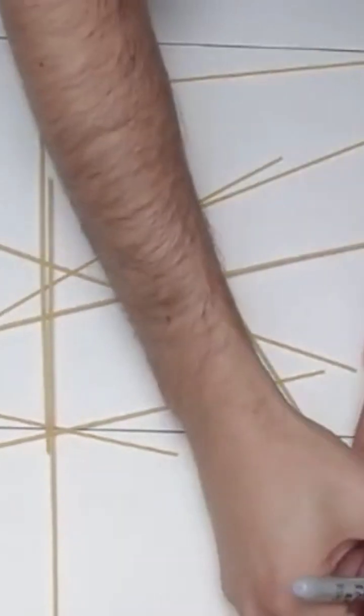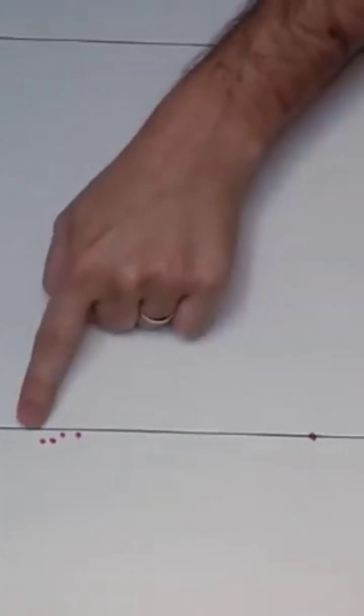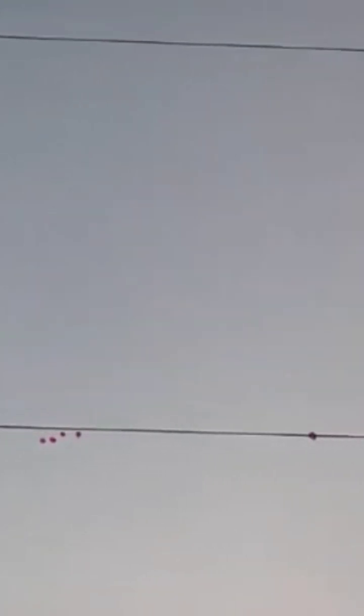Now we need to count up the number of times the spaghetti crossed one of the grid lines. In my case I counted 14 crossings.